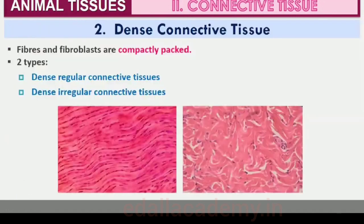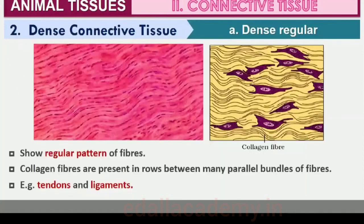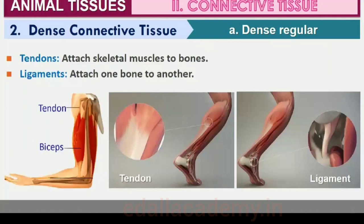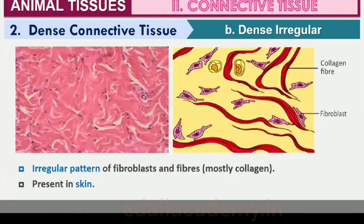Fibers and fibroblasts are compactly packed in the dense connective tissues. Orientation of fibers may show a regular or irregular pattern, called dense regular and dense irregular tissues. In dense regular connective tissues, collagen fibers are present in rows between many parallel bundles of fibers. Tendons, which attach skeletal muscles to bones, and ligaments, which attach one bone to another, are examples. Dense irregular connective tissue has fibroblasts and many collagen fibers oriented differently and is present in the skin.